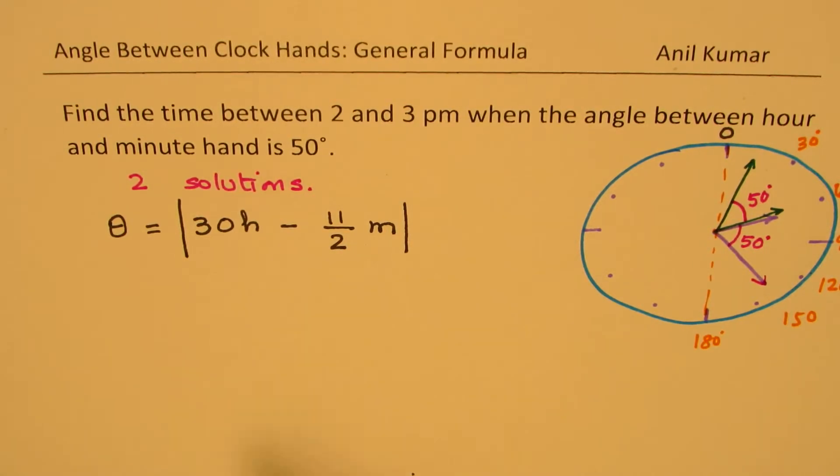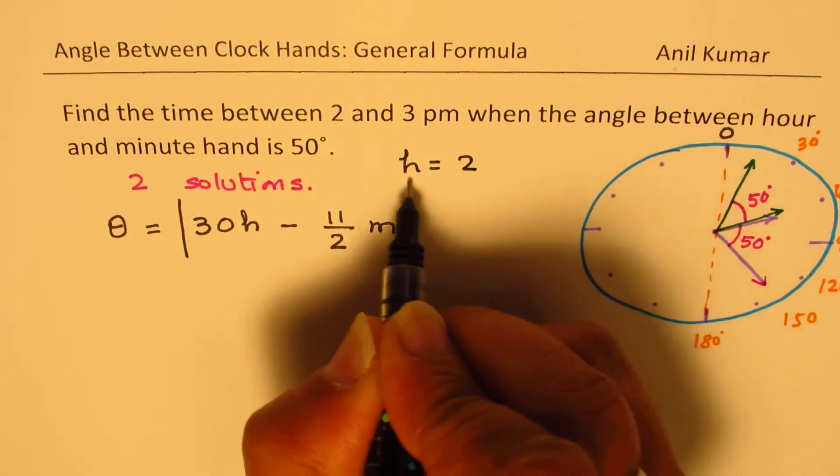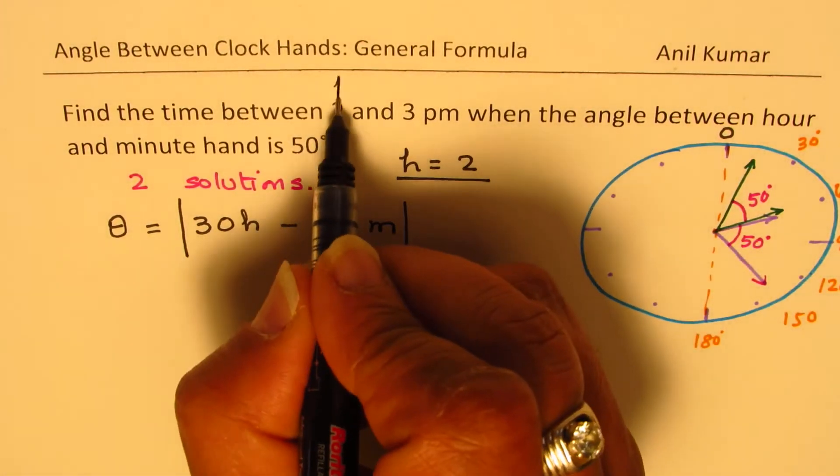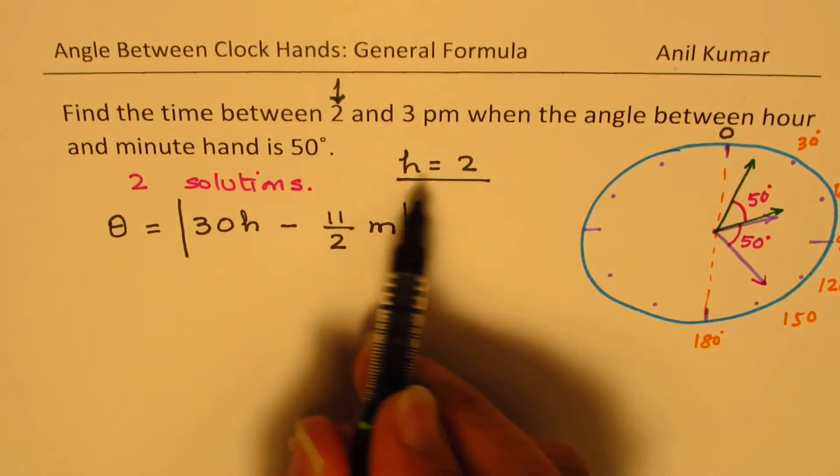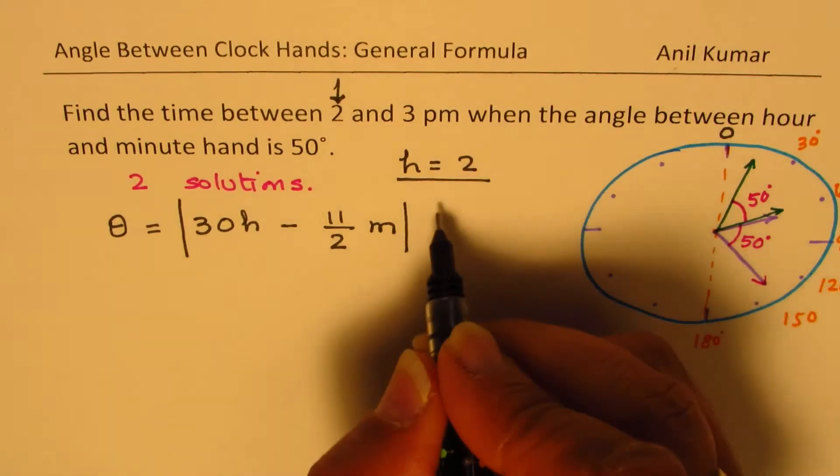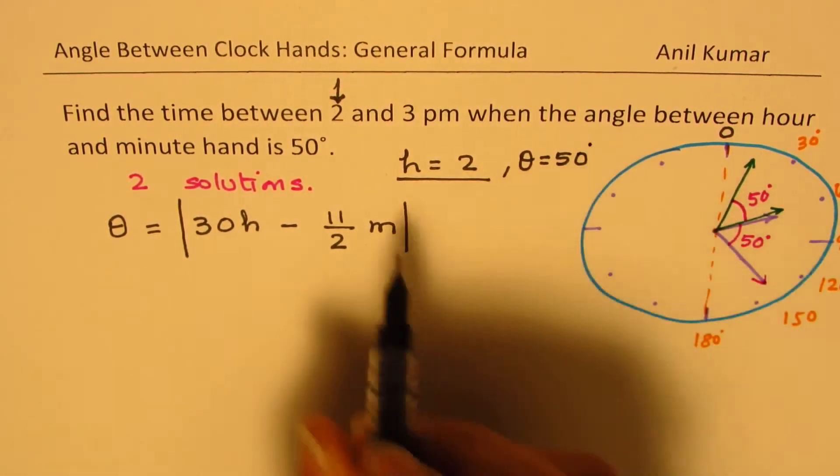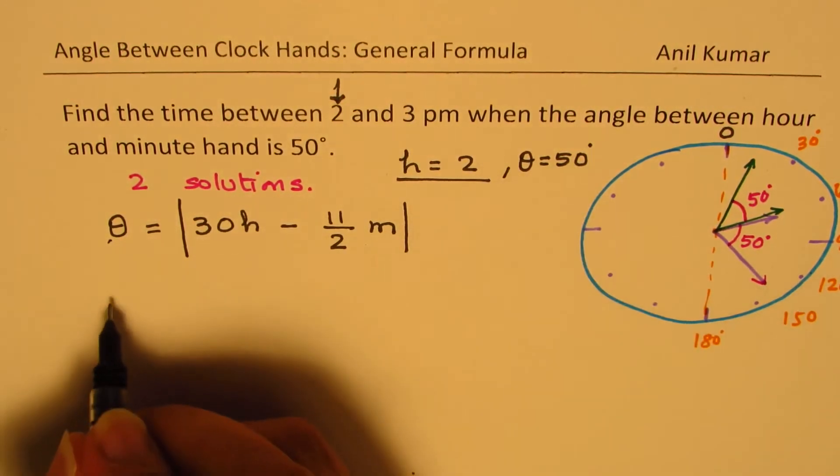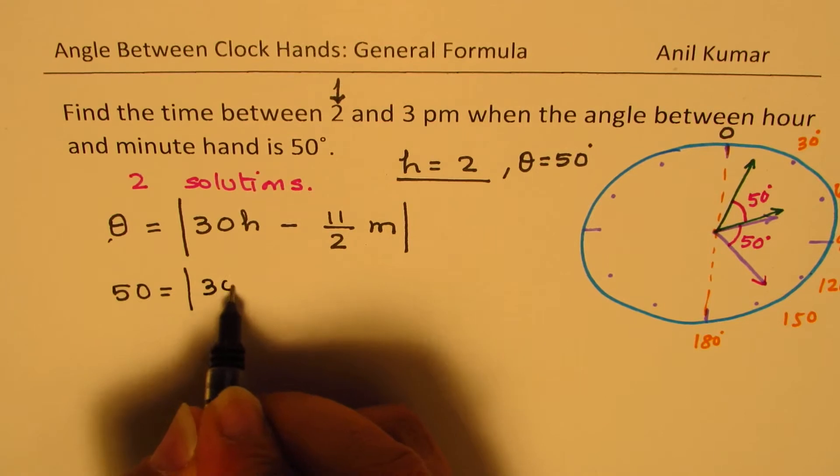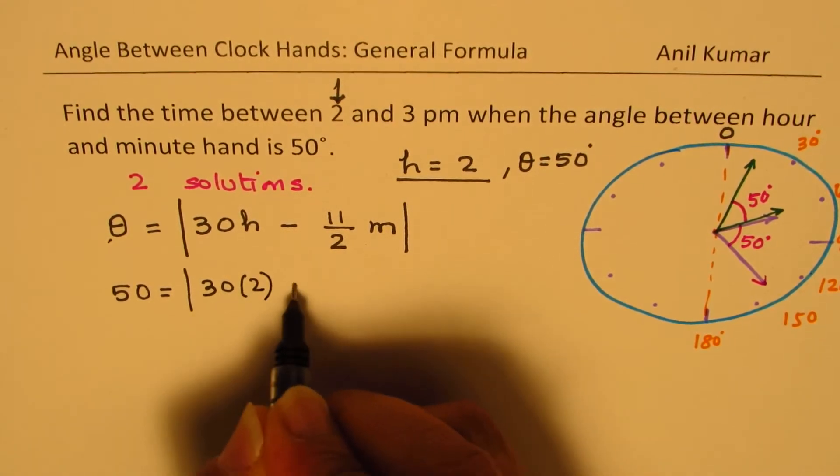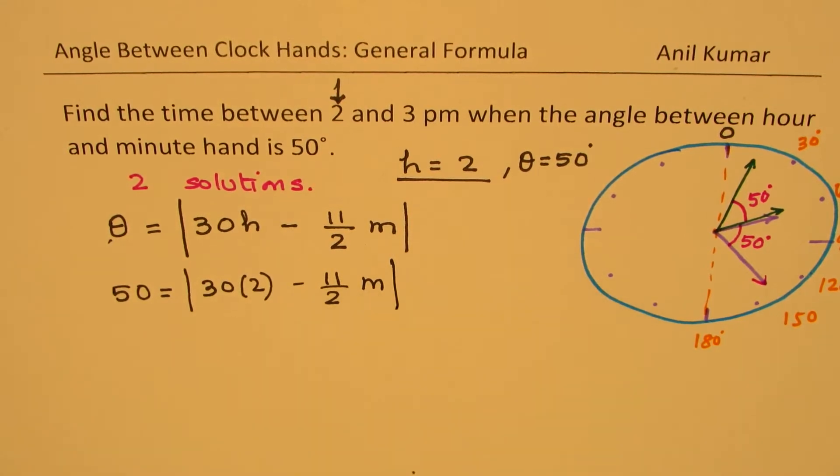So in our case, we for sure know that H is 2 hours, between 2. So we'll start somewhere more than 2, right? But less than 3, so H is 2. We also know that theta is 50 degrees. Using this formula, we can write down 50 equals to absolute value of 30 times 2 minus 11 over 2 minutes. And then we can find the minutes.